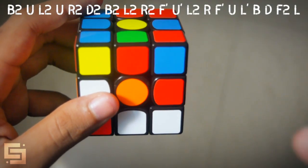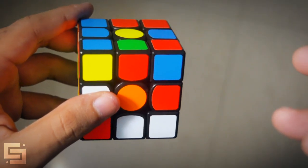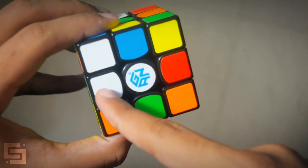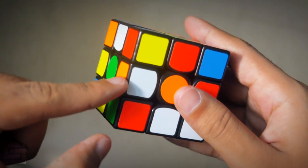This was the scramble that Felix got and in this scramble, Felix solved the white cross. The white cross has the cross pieces nicely lined up. We have the green edge connected with the white center on the D layer and we have the orange edge in here.